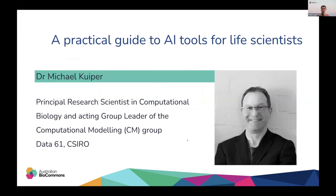Today we are thrilled to welcome Dr Michael Kuiper. He's going to walk us through a practical guide to AI tools for life scientists. Michael is Principal Research Scientist in Computational Biology and Acting Group Leader of the Computational Modelling Group at Data61 of CSIRO. He specialises in computer simulations and has recently applied AI technologies in biology and the Advanced Engineering Biology Future Science Platform, or AEB-FSP. He also runs a weekly CSIRO teams meetup called Tuesday Morning AI. Previously, Michael worked at the Victorian Life Science Computation Initiative at Melbourne Uni, and with the United States Antarctic Program researching antifreeze proteins — or, as he likes to say, why some fish don't freeze. Welcome, Michael. I'll now hand over to you.